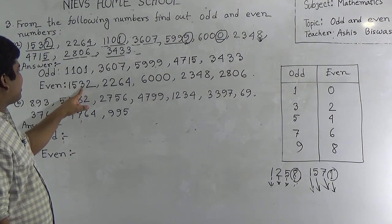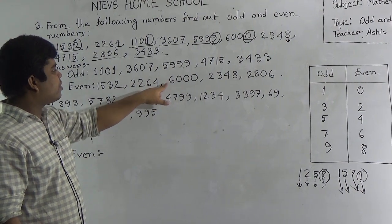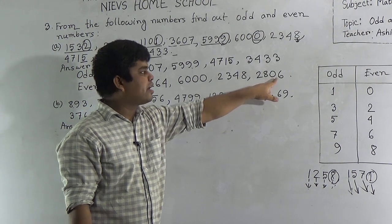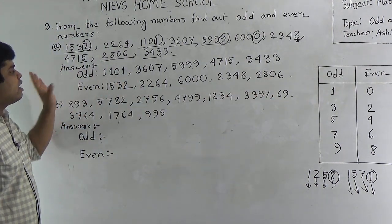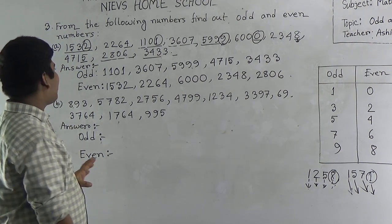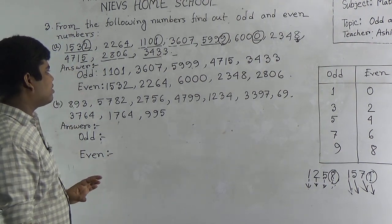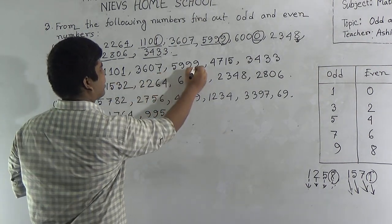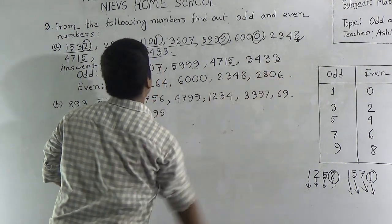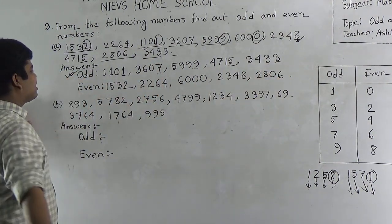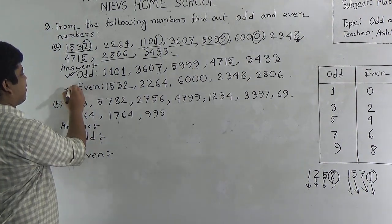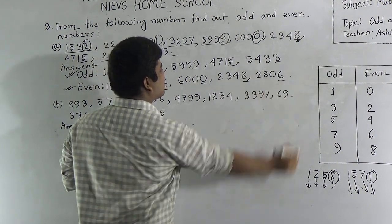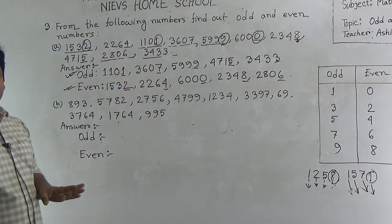And one thousand five hundred thirty-two, two thousand two hundred sixty-four, six thousand, two thousand three hundred forty-eight, and two thousand eight hundred six are even numbers. Now we can check if our odd and even numbers are correct. We notice the last digit of each odd number: one — okay, seven — okay, nine — okay, five — okay, three — okay. So the odd numbers are correct. Now we check the even numbers by their last digits: two — even, four — even, zero — even, eight — even, six — even. All even numbers are correct.